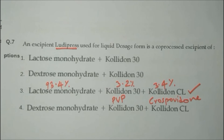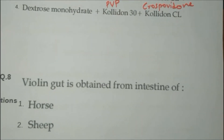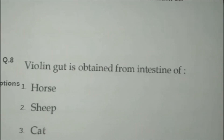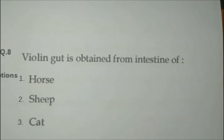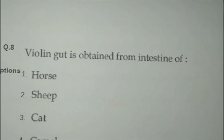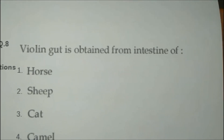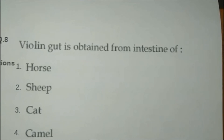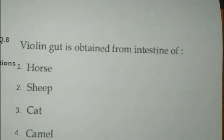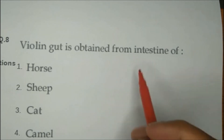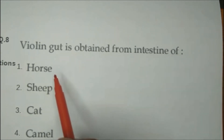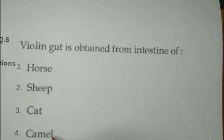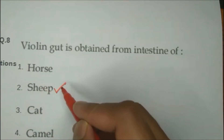Question number eight: Violin gut is obtained from the intestine of — options are horse, sheep, cat, camel. The correct answer is sheep. Violin gut is the string used inside a violin, the musical instrument, and it is obtained from sheep.